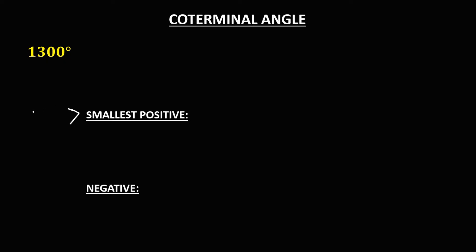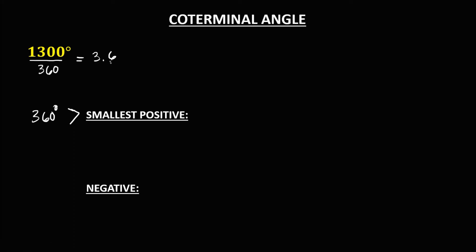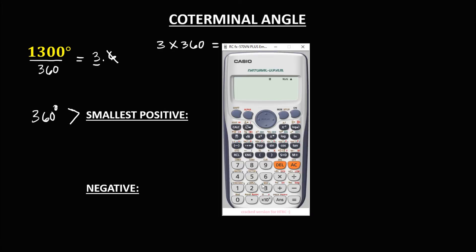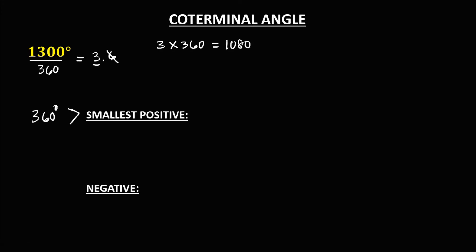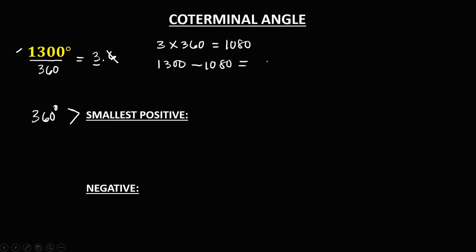For 1300 degrees, to find the smallest positive coterminal angle, since it must be less than 360 degrees, we divide by 360 to find the number of rotations: 1300 divided by 360 equals 3.6. We drop the decimal and take the whole number, 3. Then 3 times 360 equals 1080. So 1300 minus 1080 equals 220 degrees — the smallest positive coterminal angle.